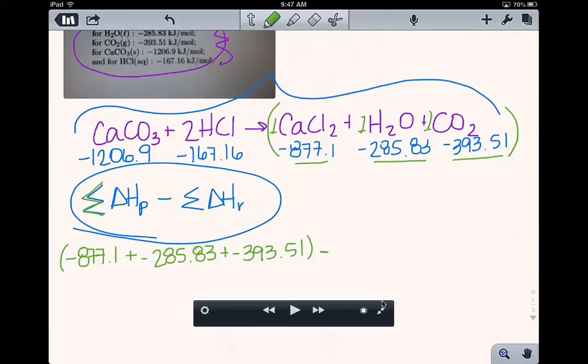And then I'm going to subtract all of my reactants. And so for my reactants, I have one calcium carbonate, so negative 1206.9 plus I have two hydrochloric acids. So I'm going to take 2 times the delta H of HCl, or negative 167.16.